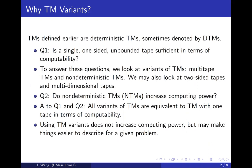For deterministic Turing machines we use DTM to represent them. Our first question is: is a single one-sided unbounded tape sufficient in terms of computability? To answer this, we will look at variants including multiple tape Turing machines, non-deterministic Turing machines, two-sided tapes, and multi-dimensional tapes.